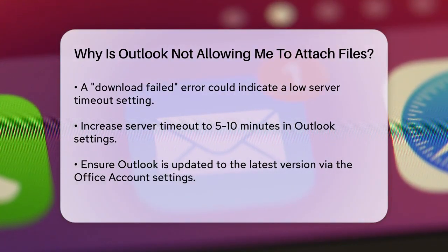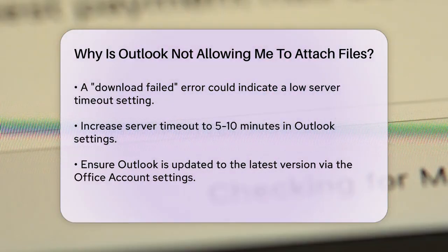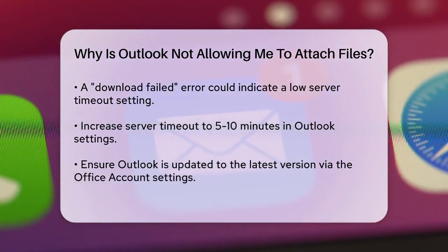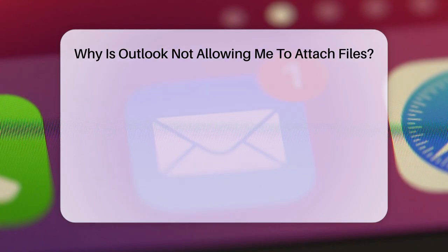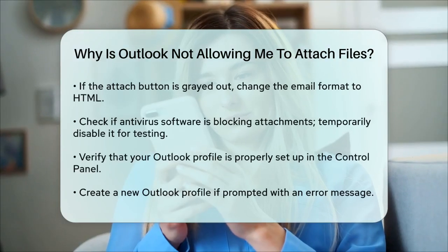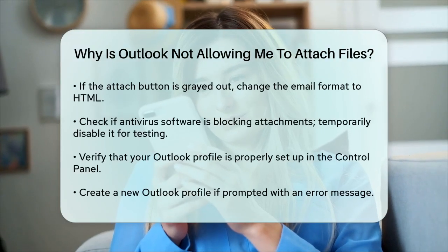If the Attach button is grayed out, it could be due to the email format. Try changing the email format from the default to HTML. To do this, open a new email, go to the Options tab in the upper right toolbar, and select the HTML format. This can sometimes resolve the issue with the Attach button being grayed out.